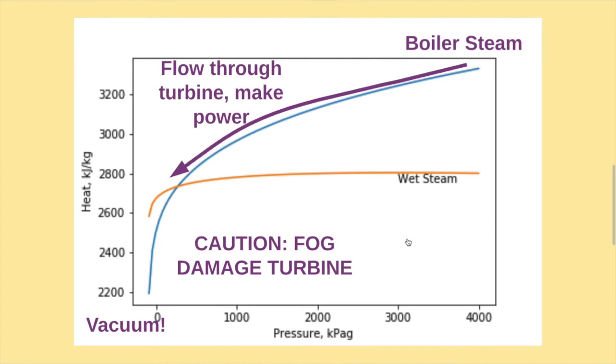The pressure keeps dropping, and we create a vacuum. We also create fog, and this is a problem. I forgot to tell you that the steam is traveling at about 150 meters per second, or 540 kilometers per hour. Turbine blades are damaged very quickly when hit with tiny drops of water at this speed. There is a very practical limit to how much heat we can convert to work.